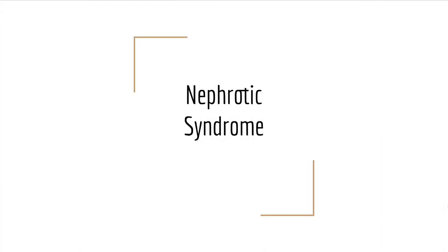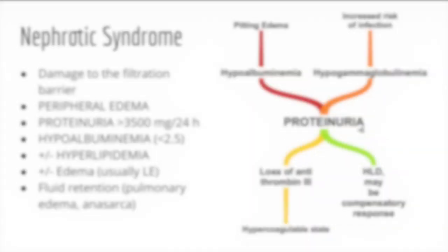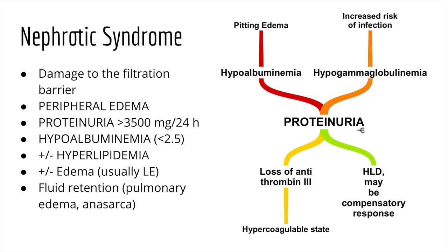In this video we'll be talking about nephrotic syndrome. As an overview, we have to keep in mind that there's damage to the filtration barrier that's likely causing all of the other effects. In general there may be peripheral edema, protein at a level of 3500 milligrams in a day or more, and low albumin. Because of that you may develop pitting edema due to a change in oncotic pressure.